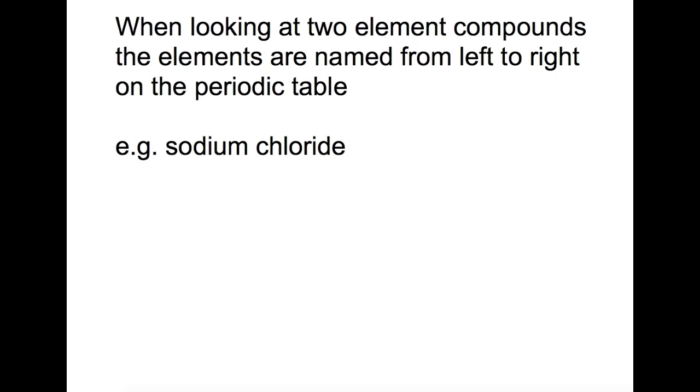When you're looking at the names of the compounds to try and work out what elements are present, they're named from left to right on the periodic table. So here we have sodium, and chloride goes back to being chlorine.